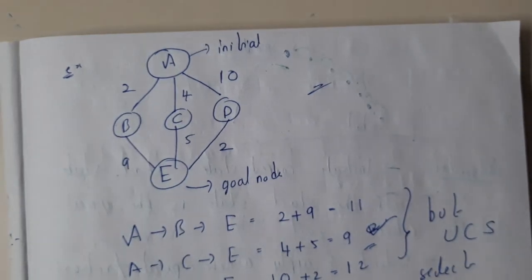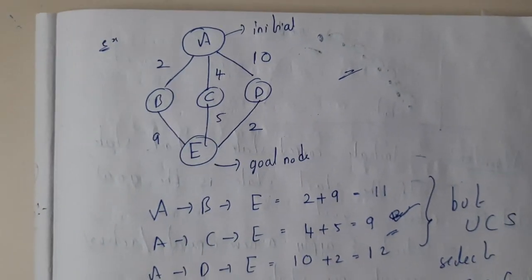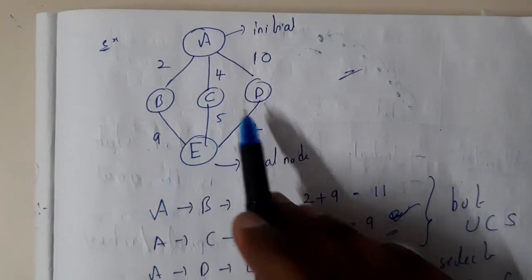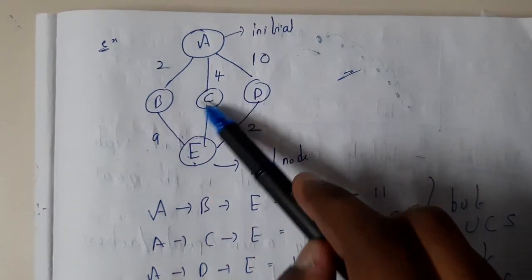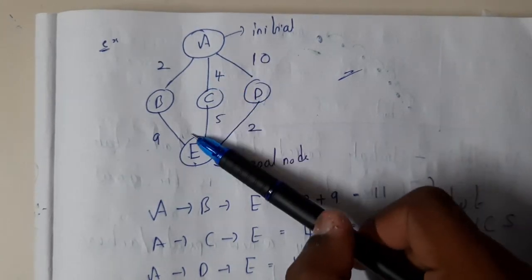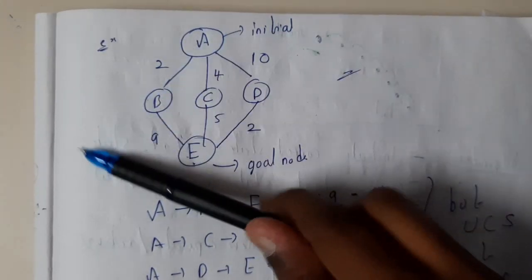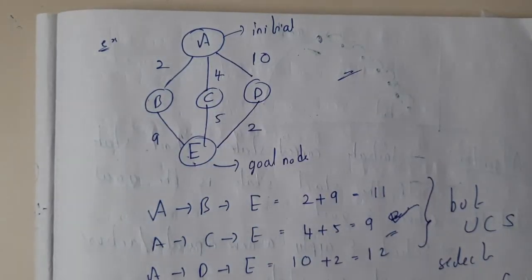If we take a small example, here if you want to reach to E, what will be the solutions? A to B, B to E. A to C, C to E. A to D, D to E. Even though we are having this many solutions, if you write all the solution possibilities...